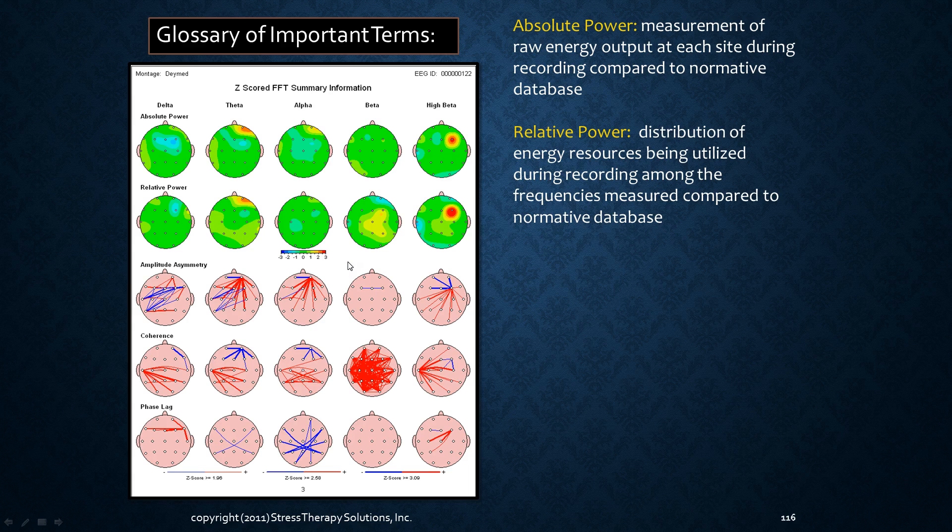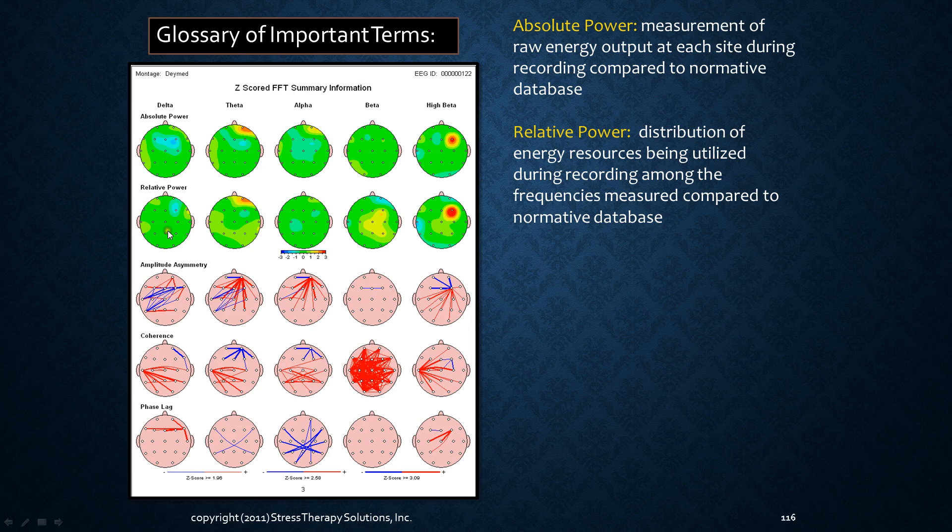Relative power tells us the distribution of energy resources being utilized during the recording among the frequencies measured compared to the normative database. So basically right here is telling us a lot about resource allocation. So given that the brain has the number of power that it has, up here it's showing us how much power a person has compared to the normative database. Here is telling us sort of how that person's brain is allocating resources, like how important that brain thinks that it is to allocate resources to a particular area. So this is mostly green, which is normal.